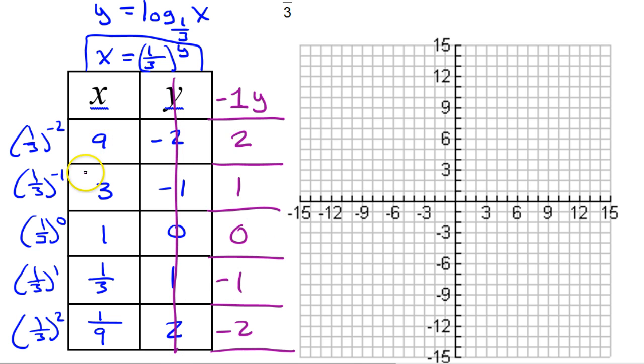So let's go ahead and plot these points, 9, 2, etc. So that's right 9 up 2. So that will be right here. Over 3 up 1.